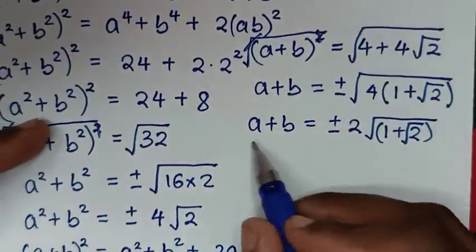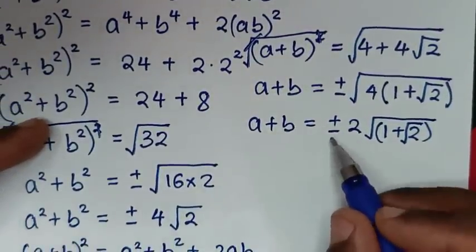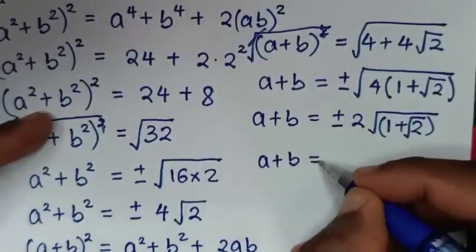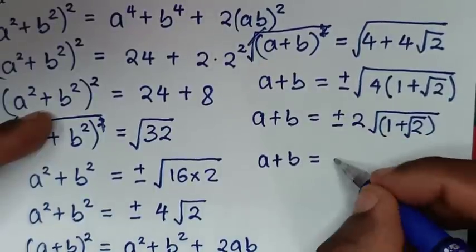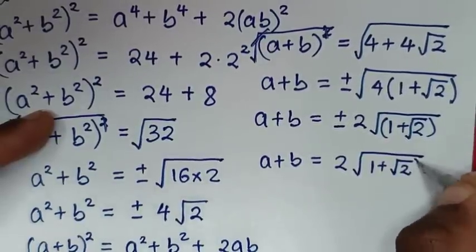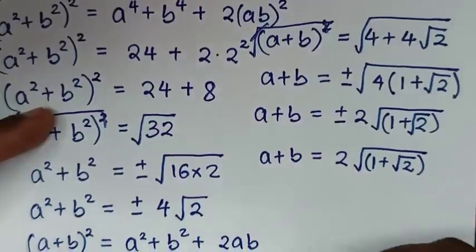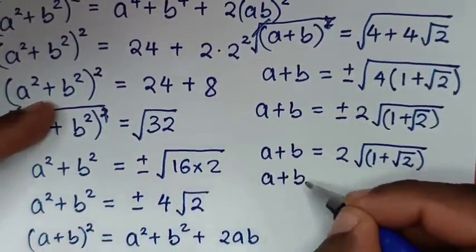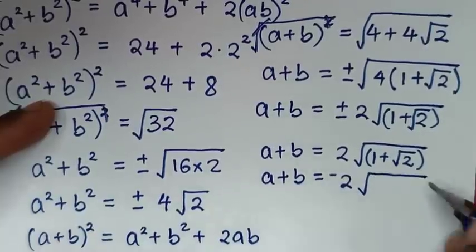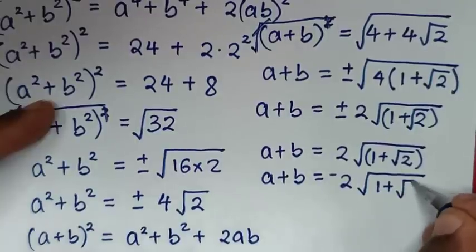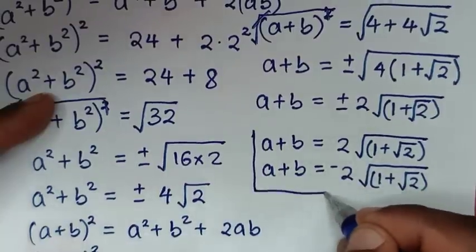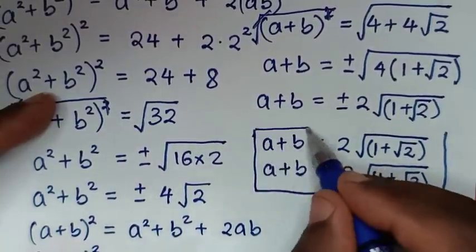Because of the plus or minus, we have two solutions: a + b equals positive 2√(1 + √2), or a + b equals negative 2√(1 + √2). These are all the values of a + b for this problem.